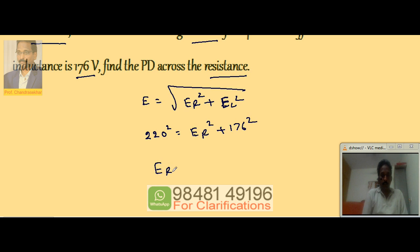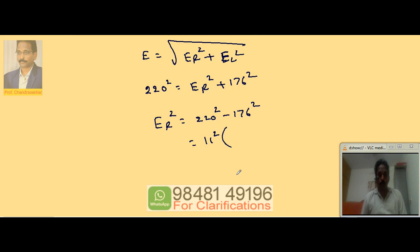So E_R squared is equal to 220 squared minus 176 squared. So here if I take 11 squared common, because 11 into 20, 220 can be written as 11 into 20.